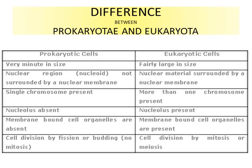In prokaryotic cells, the nucleus is absent, while in eukaryotic cells the nucleus is present. Membrane-bound cell organelles are absent in prokaryotic cells, but present in eukaryotic cells. For cell division, prokaryotic cells divide by binary fission or budding with no mitosis, while eukaryotic cells divide by mitosis or meiosis, reproducing through sexual or asexual reproduction.